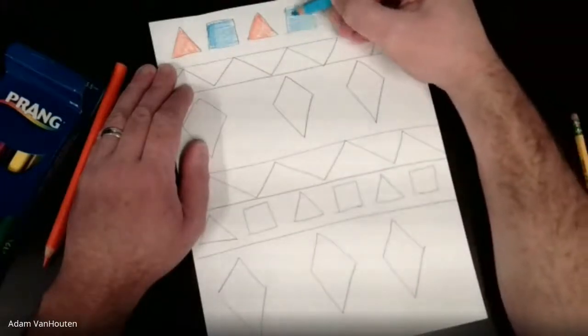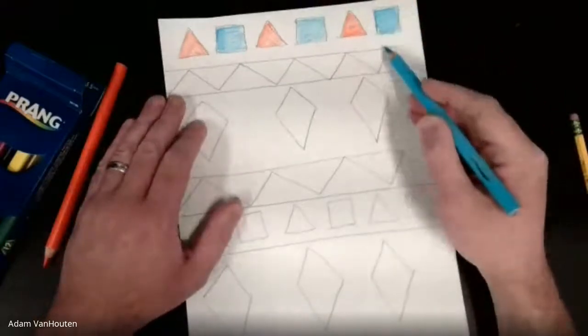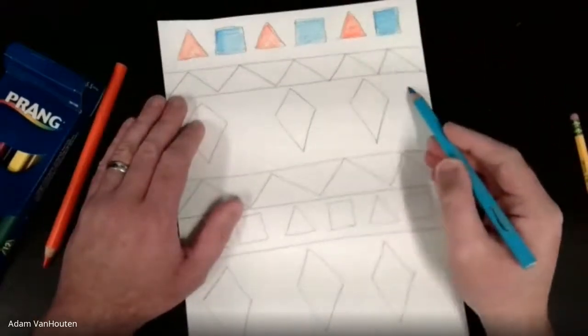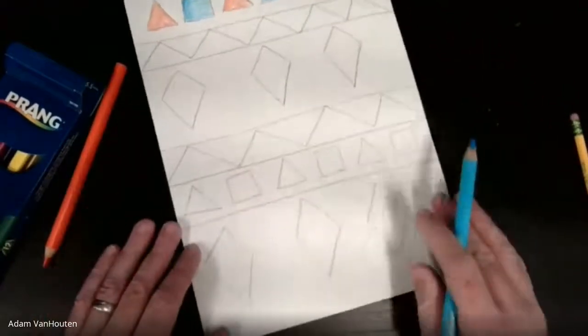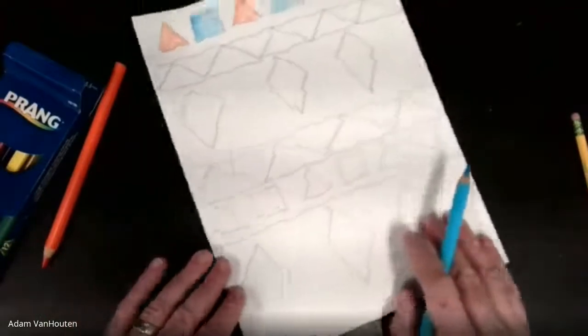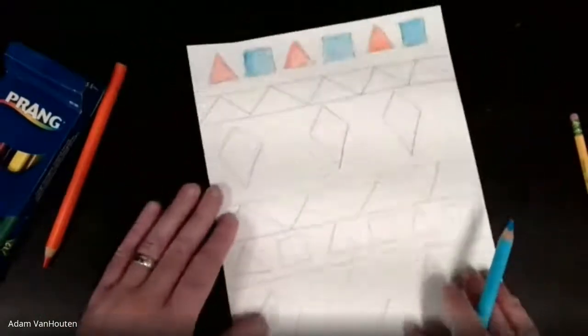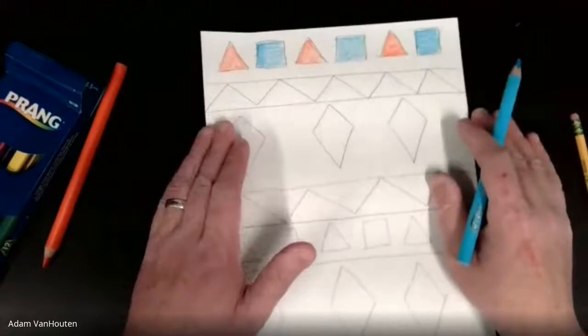So there are my squares. And then you could finish coloring it. You could go all the way down and color in your patterns and your shapes all the way down your paper. And then you'd have a nice looking pattern and Native American rug.